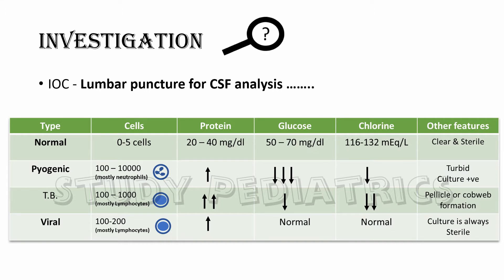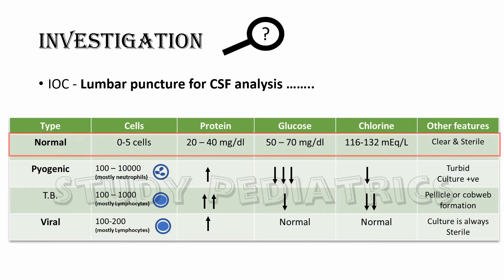Let's see the normal values first. Number of cells are between 0 to 5 — essentially no WBCs. Proteins are between 20 to 40 milligrams per dL, and glucose between 50 to 70 milligrams per dL. Chloride levels are 116 to 132 milliequivalents per liter, and the fluid is clear and sterile. The biochemical values other than protein are similar to blood values but slightly less.